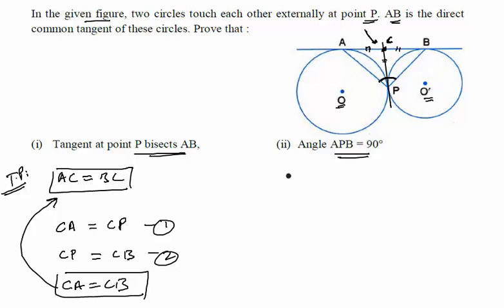If you look at triangle ACP, since CA equals CP, the angles opposite to these sides are equal. Therefore, angle CAP is equal to angle CPA.